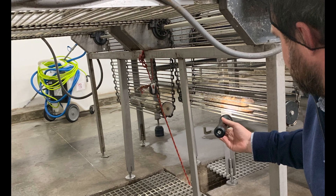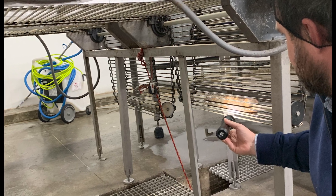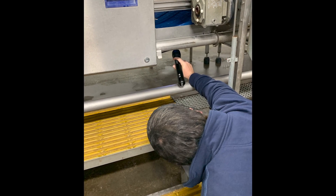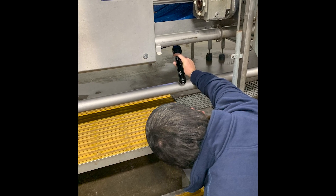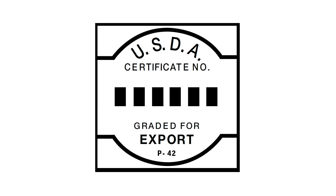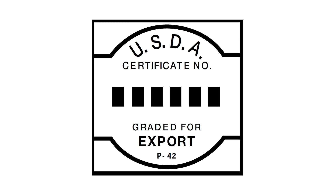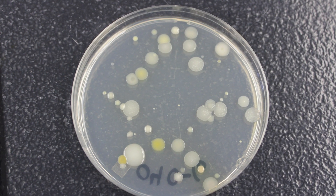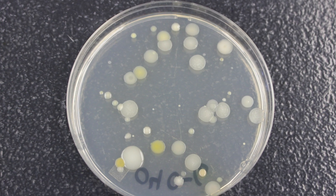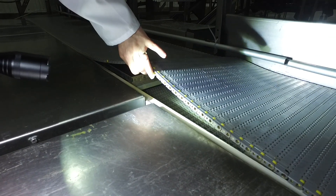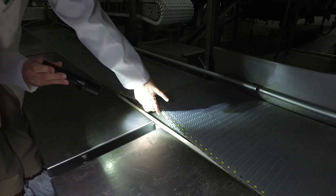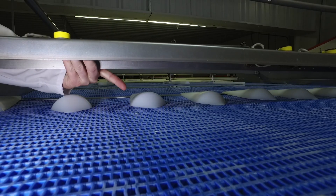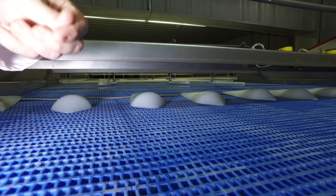To meet these goals, AMS inspectors will assess for voluntary grading program requirements during the pre-operational sanitation inspection and throughout processing operations by utilizing organoleptic inspection assessments. While AMS may review microbial test results as part of certain export programs, AMS does not conduct nor require swabbing or biological testing during routine sanitation assessments. Organoleptic inspection assessments include sight, smell, and touch. However, microbial growth will not always be seen, smelled, or felt.